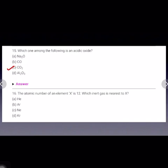The element with atomic number 12 is magnesium. Which inert gas is nearest to X? So the inert gas which is nearest to X, that is magnesium, is neon.